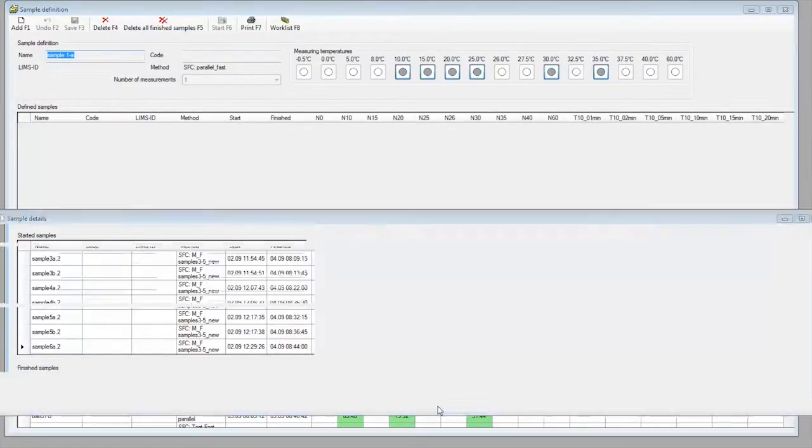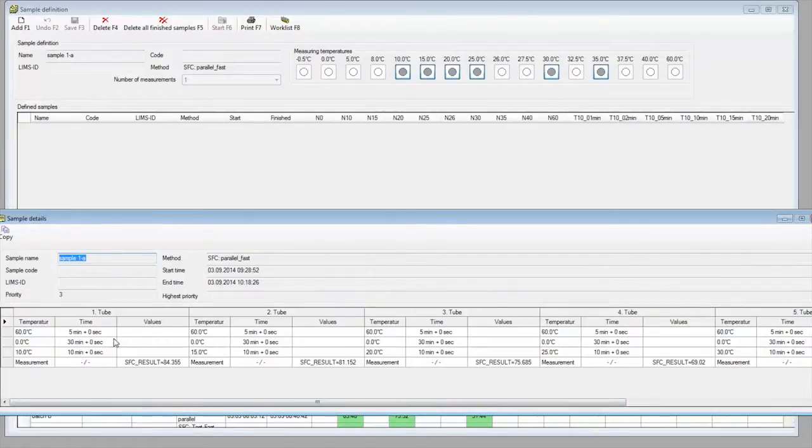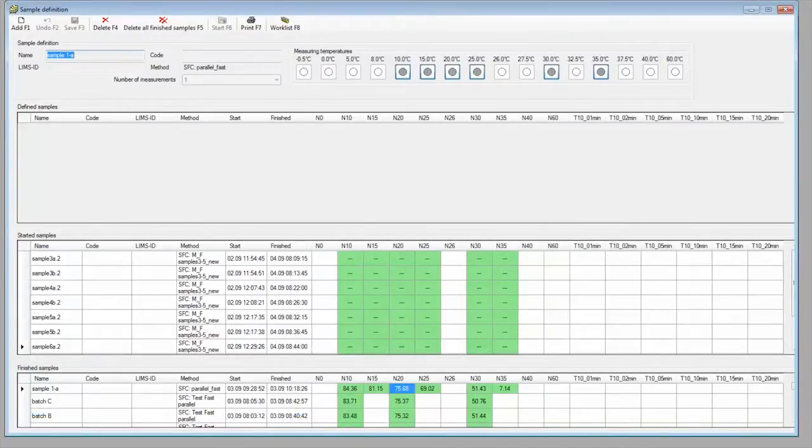The details of the method, including the actual times, can be checked. Older samples are archived for data tracking. After measurement, the sample can either be returned to the output tray or discarded via a waste line.